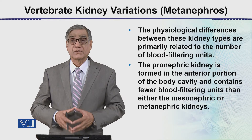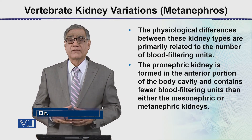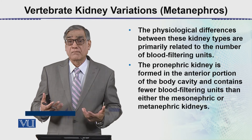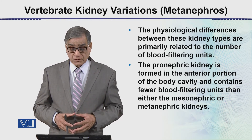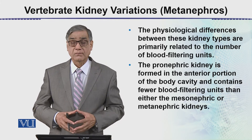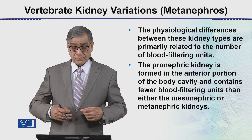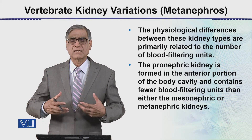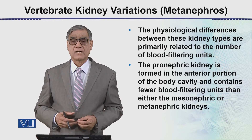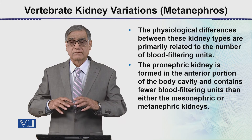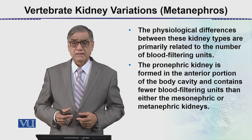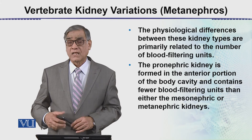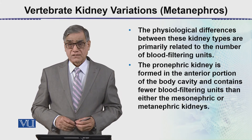The physiological differences between these kidney types are primarily related to the number of blood filtering units. The pronephros has very few blood filtering units, while the metanephros may go up to a million. The pronephros is formed in the anterior portion of the body cavity and contains fewer glomeruli or renal capsules compared to the metanephros. Evolutionarily and developmentally, their number has increased and efficiency has become better.